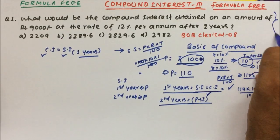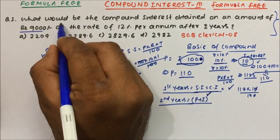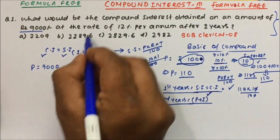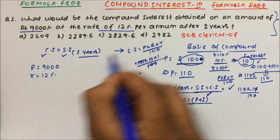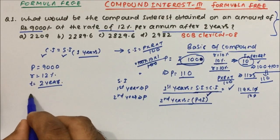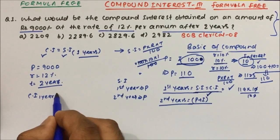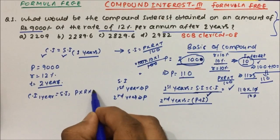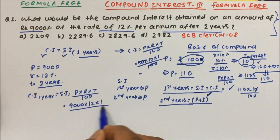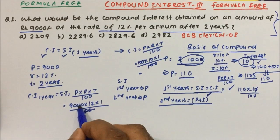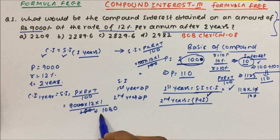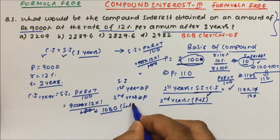Let's understand this concept by solving a problem. The question is: what would be the compound interest on an amount of 9000 rupees at 12 percent per annum for two years? Principal is 9000 rupees, rate is 12 percent, time is 2 years. For the first year, CI equals SI, so using P×R×T/100: 9000×12×1 divided by 100 equals 1080 rupees interest for year one.